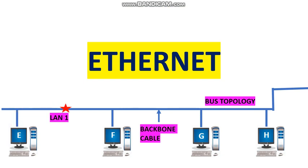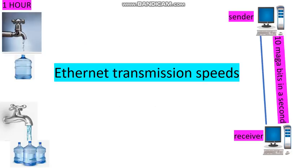Generally, Ethernet uses the bus topology. A bus topology is a topology for a local area network in which all the nodes are connected to a single cable. The cable to which all the nodes are connected is called the backbone.